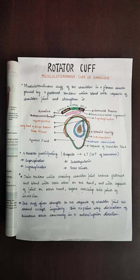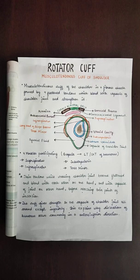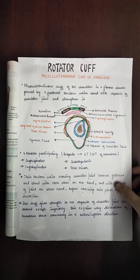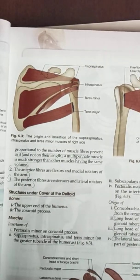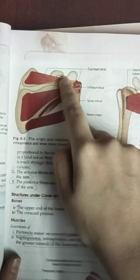The fibrous sheet — the rotator cuff — is made from muscles that originate from the scapular region and insert into the lesser or greater tubercle of the humerus. From the scapular region, we first talk about the supraspinatus, which originates from the supraspinous fossa and inserts into the greater tubercle.